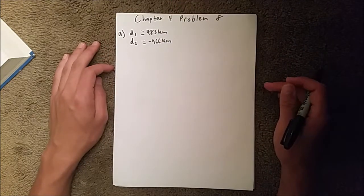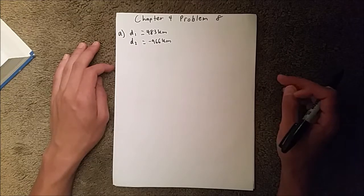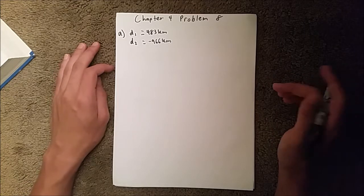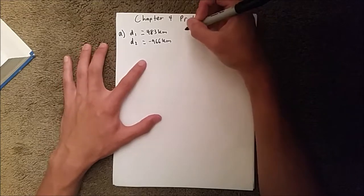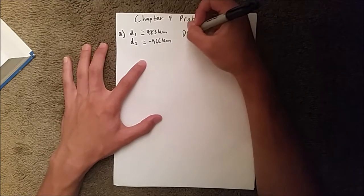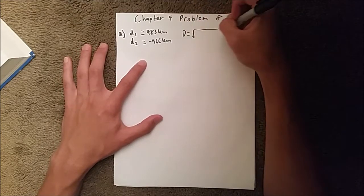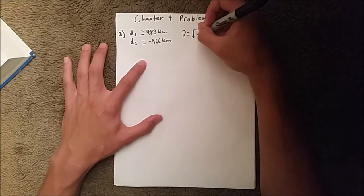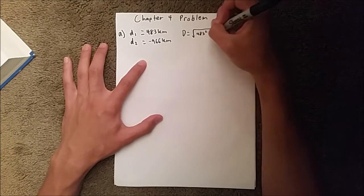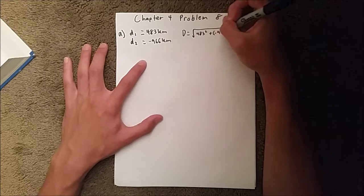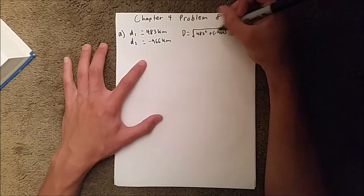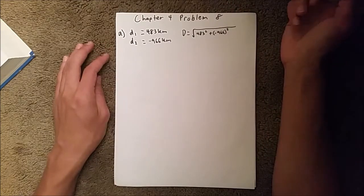And so, for magnitude, we know that is regardless of the sign. So, we're going to do total displacement equals the square root of 483 squared plus negative 966 squared. And that sign doesn't matter because this whole thing is squared, so it's going to be positive no matter what.